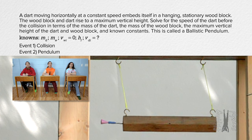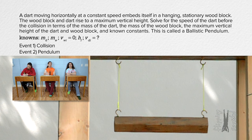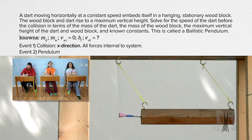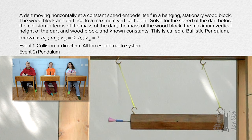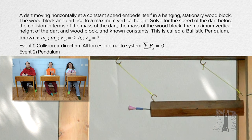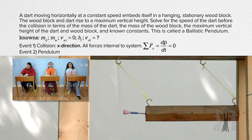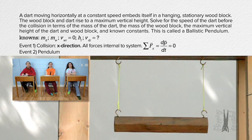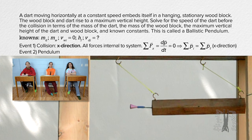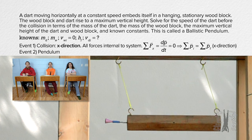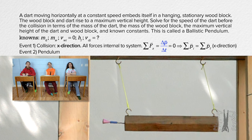What general physics principles are we going to use to analyze those events? First there is a collision. During that collision, all the forces in the x-direction are internal to the system. The force the dart applies to the wood block is equal and opposite to the force the wood block applies to the dart — a Newton's Third Law force pair. Therefore, the net force in the x-direction equals zero, and because net force equals the derivative of momentum with respect to time, the momentum of the dart and wood block system does not change. During the collision, linear momentum in the x-direction is conserved.